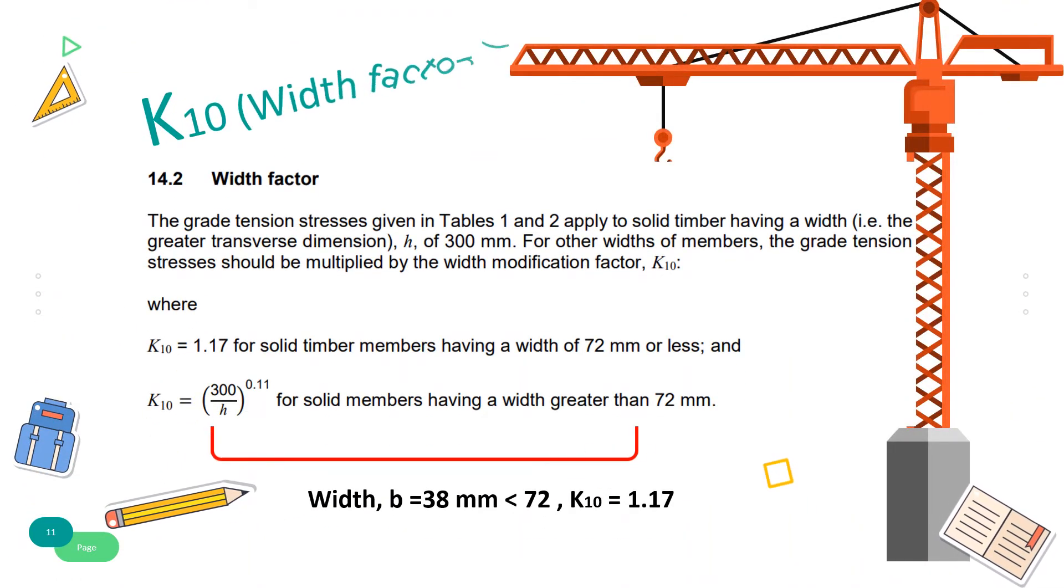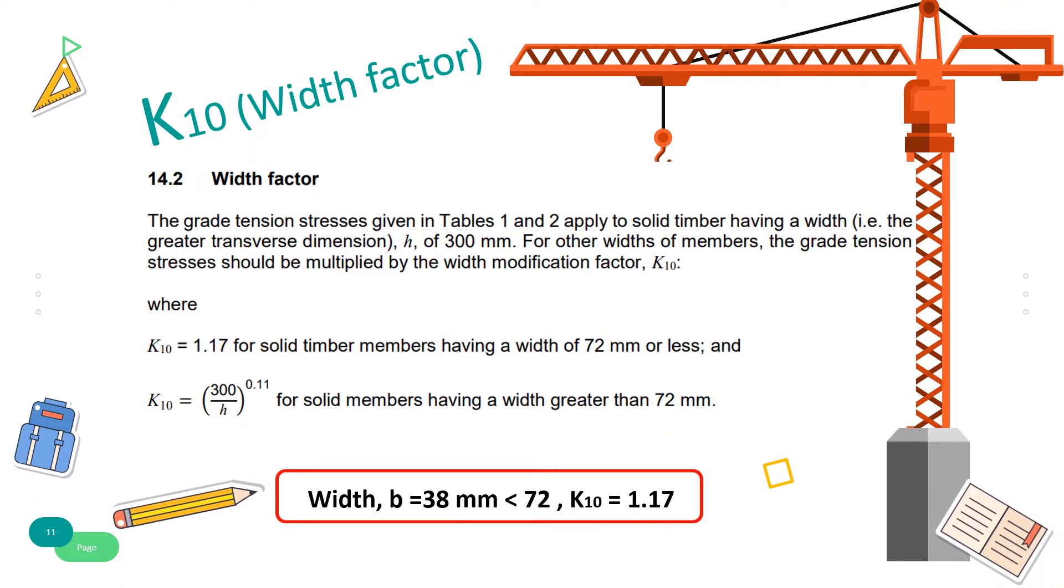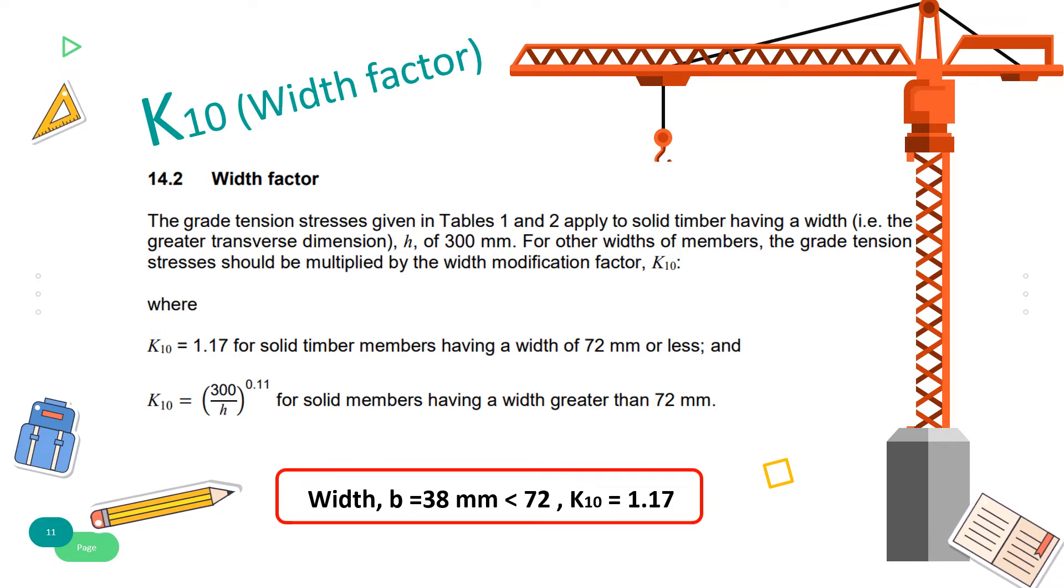Based on clause 14.2, modification factor K10 for width factor is 1.17 for this section since the solid timber has width B of 38 mm, which is less than 72.